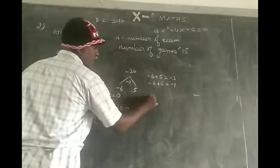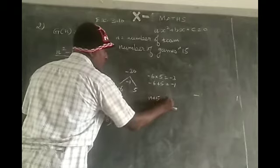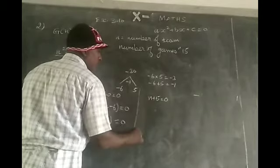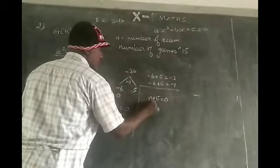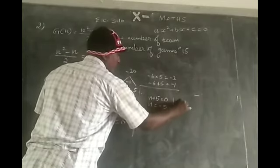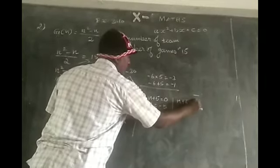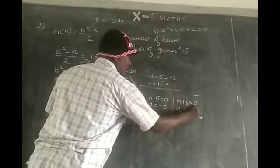So therefore, n plus 5 is equal to 0. n is equal to minus 5.